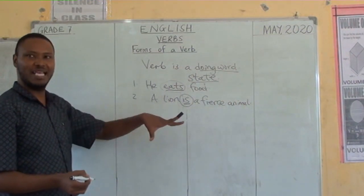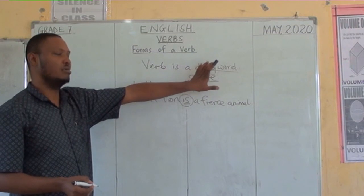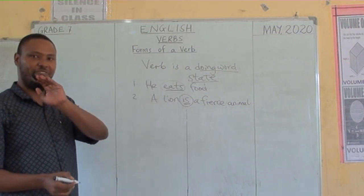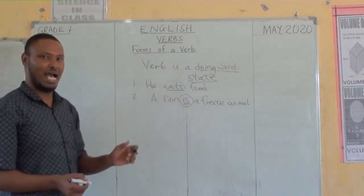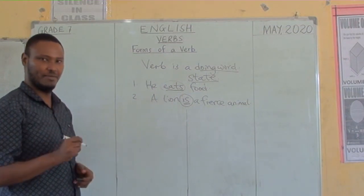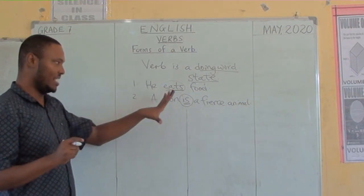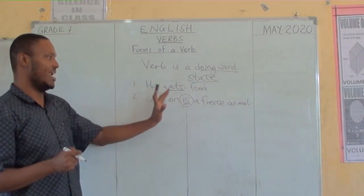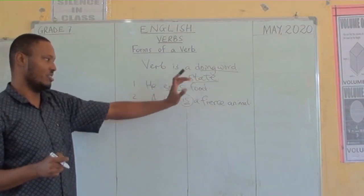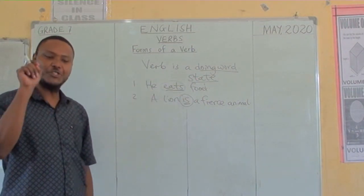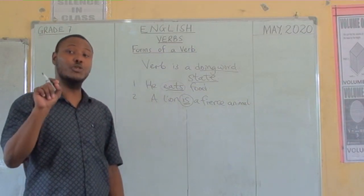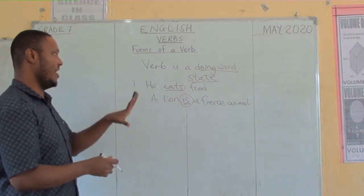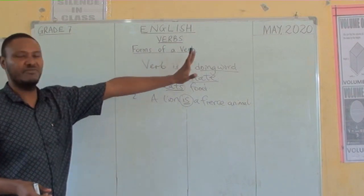Verbs that show action are called dynamic verbs, and verbs that show state are called stative verbs. What does a verb do? A verb shows action and a verb shows state. For us to advance and to know how to use tenses properly, that is why we have to look at forms of a verb. To be good at tenses, you must know the different forms of a verb.